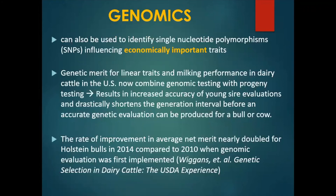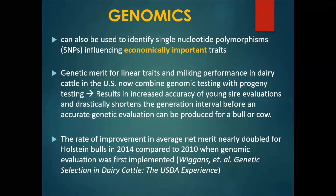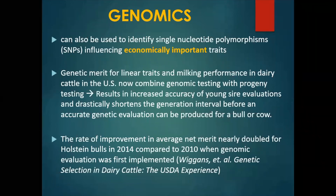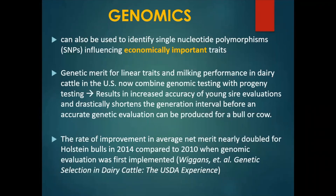Genomics can also be used to identify single nucleotide polymorphisms (SNPs) that influence economically important traits. The genetic merit for linear traits and milking performance in dairy cattle in the US now combines genetic testing with progeny testing. This results in increased accuracy of young sire evaluations and drastically shortens the generation interval before an accurate PTA — predicted transmitting ability — can be produced for a bull or cow. The rate of improvement in average net merit nearly doubled for Holstein bulls in 2014 compared to 2010, when genomic evaluation was first incorporated into genetic evaluations based on on-farm performance testing.